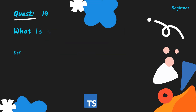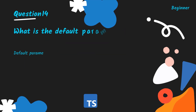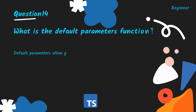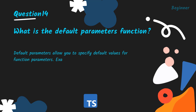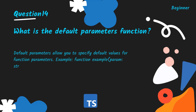What is the default parameters function? Default parameters allow you to specify default values for function parameters. Example: function example(param: string = 'default') { }.